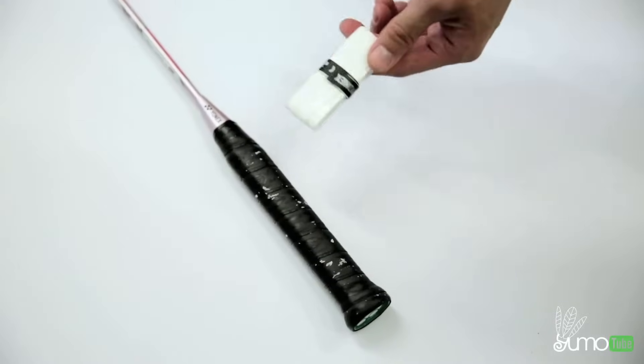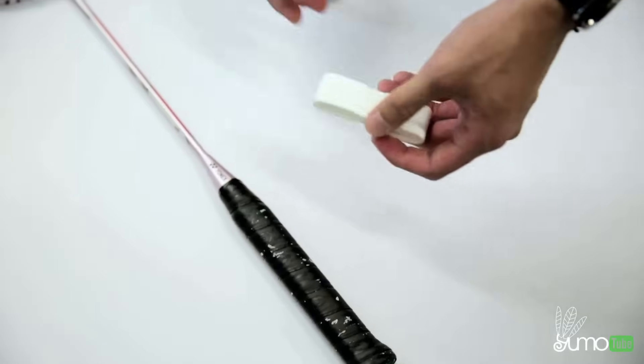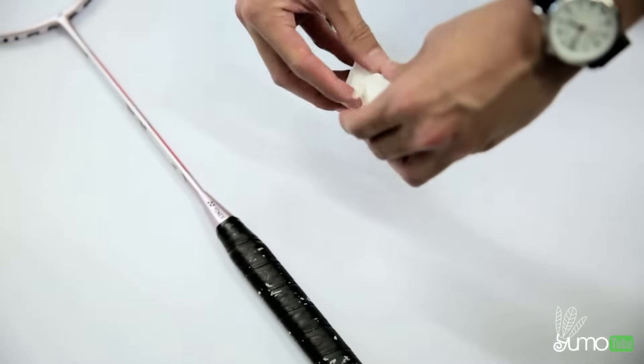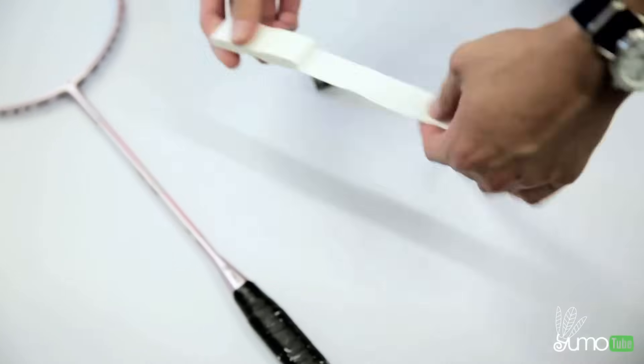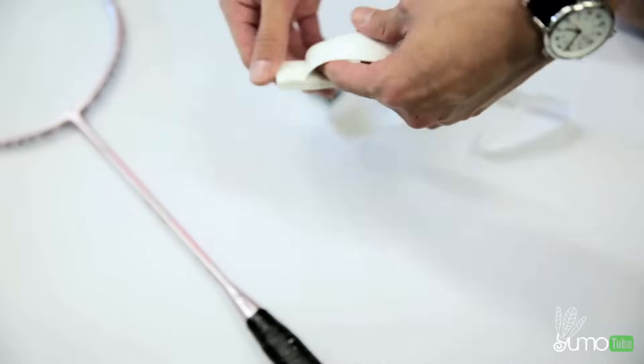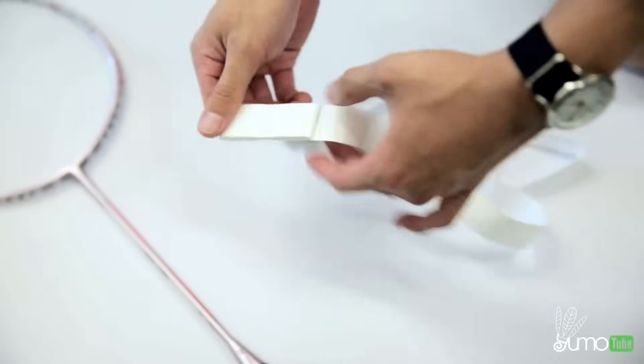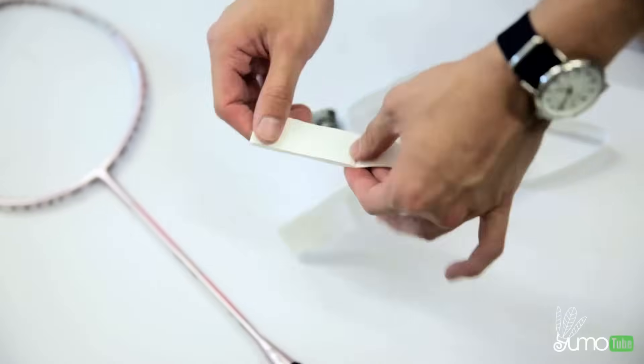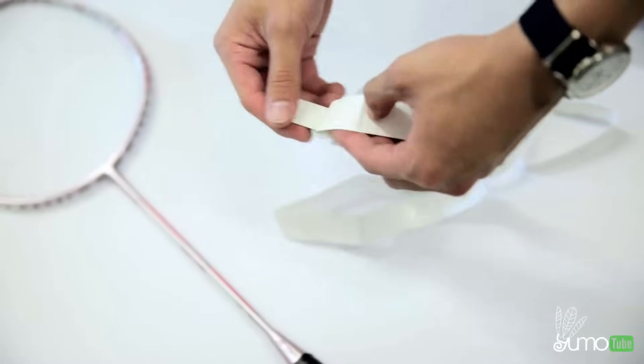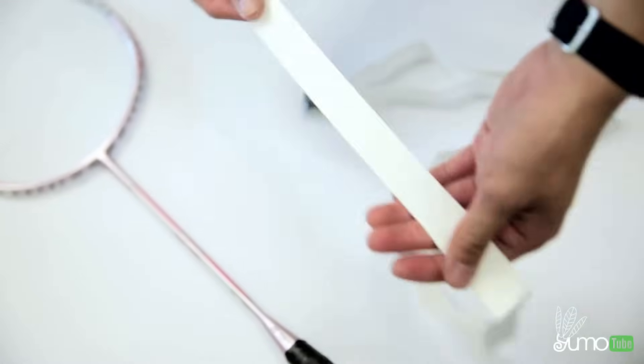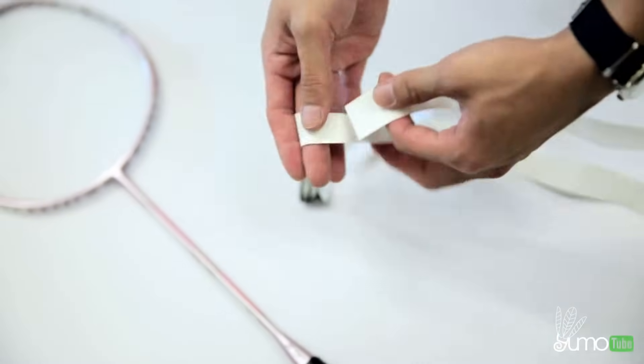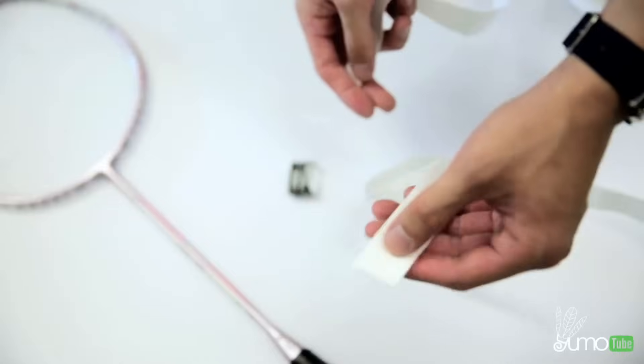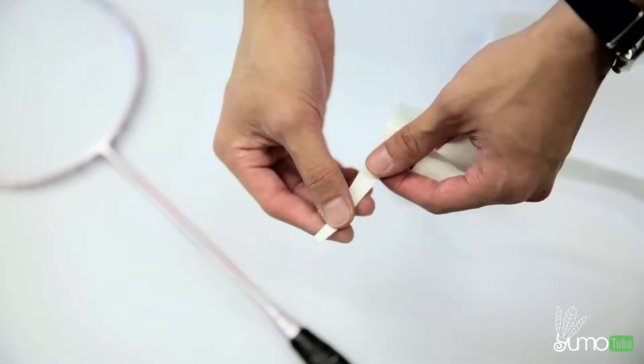So when you get a grip you just want to take off the sticker here and unravel it. So when you look at the grip there's two sides. One side is this flat square edge and the other is a sharper end.